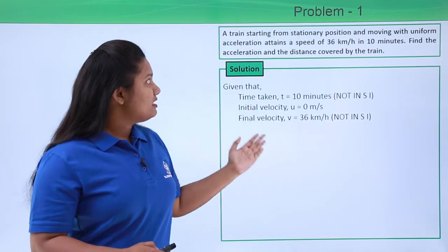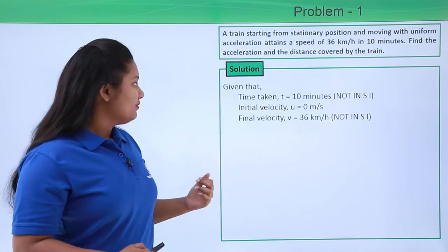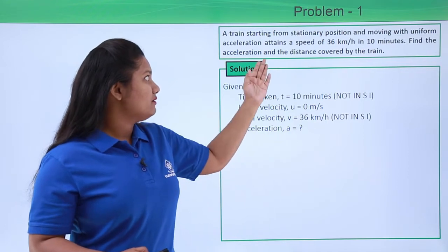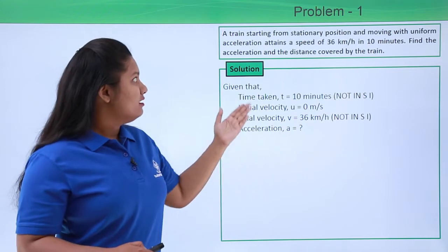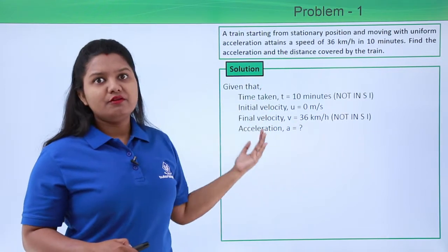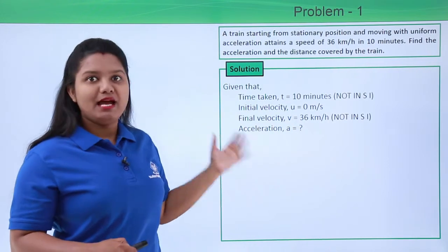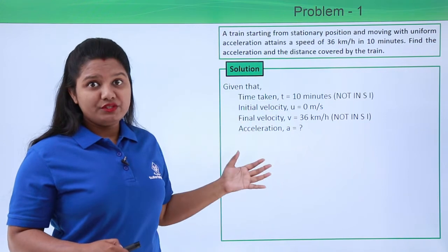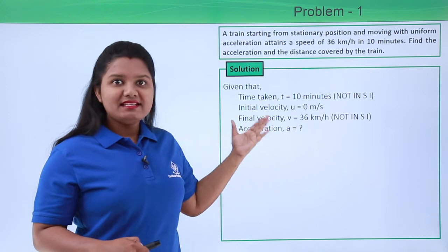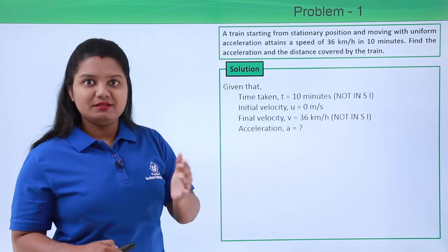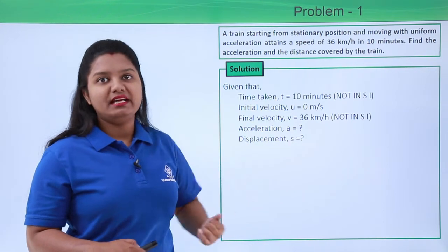With this information we need to find out the uniform acceleration that the train has attained, as well as the distance covered by the train. We can use displacement instead of distance, because in this chapter any object is assumed to have uniform motion in a straight line, so there is no difference between distance and displacement. We need to find the displacement of the train at the end of 10 minutes.